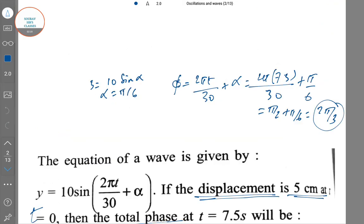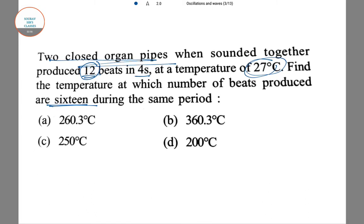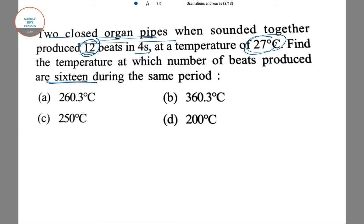Now the next one. Two closed organ pipes when sounded together produce 12 beats in 4 seconds at a temperature of 27°C. Find the temperature at which the number of beats produced are 16 during the same period.